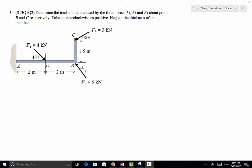We can still use the scalar formulation M equals F times D. For example, if we need to determine the moment caused by force F1 about point B, we need to extend the line of action of this force, and then draw a line from point B to be perpendicular to the line of action. Then we use trigonometry to determine this D, this moment arm, and multiply the moment arm by 4 kN to determine the moment caused by F1 about point B.